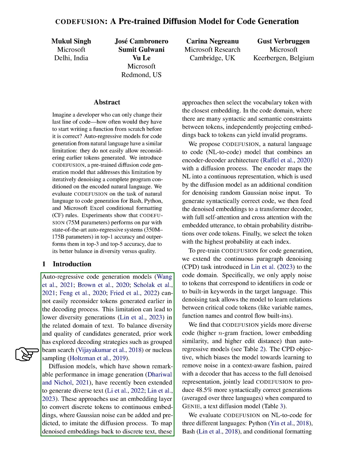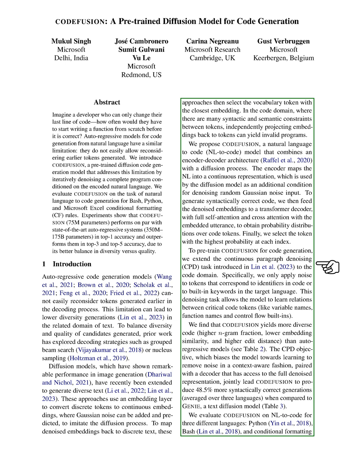These models use an embedding layer to convert discrete tokens into continuous embeddings. They then add and predict Gaussian noise to mimic the diffusion process. To convert the denoised embeddings back into discrete text, these models select the vocabulary token with the closest embedding.